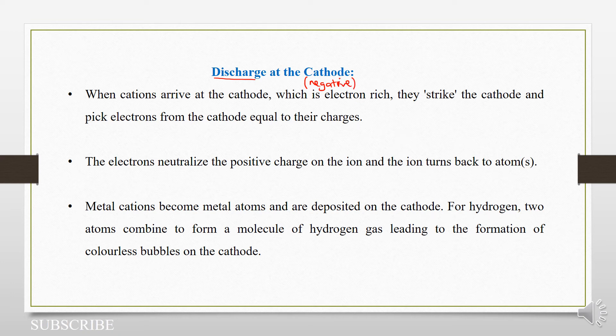So when cations reach the cathode — these are our positive ions — which is electron-rich. The cathode is electron-rich because it's negatively charged.